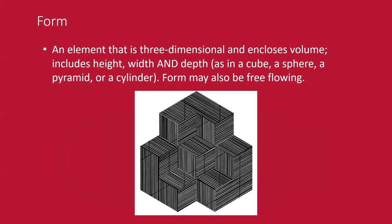A form is an element that is three-dimensional and encloses volume — it includes height, width, and depth, such as a cube, sphere, pyramid, or cylinder. It may also be free-flowing and organic. You can create form with just a bunch of lines that either change direction or change the spacing between them to allow shading and create that three-dimensional feeling.